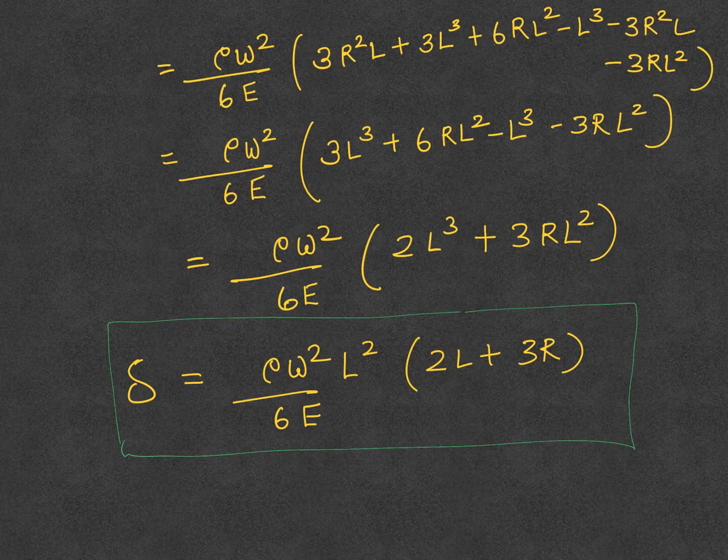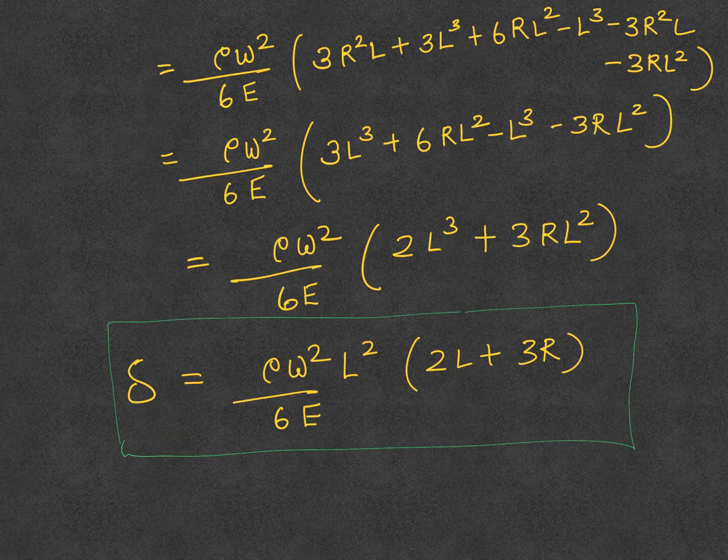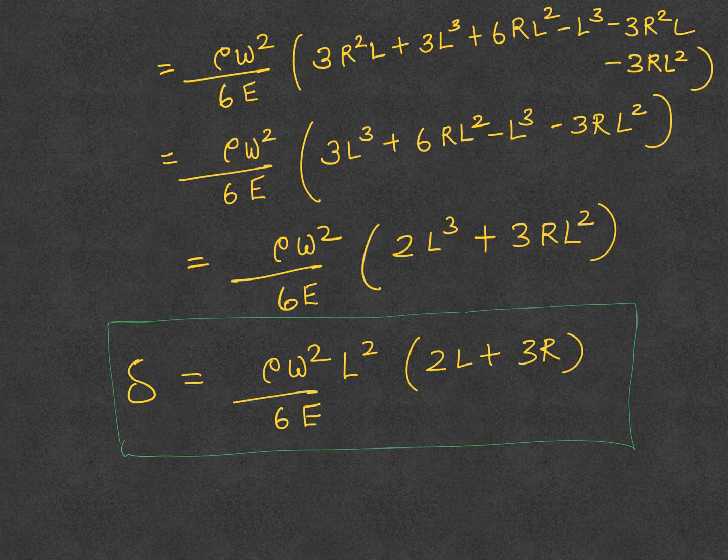It makes sense because the centrifugal force is increasing when you're running the machine at very high RPM. Moreover, the formula tells you when you have a highly stiff material with a high Young's modulus value, the deflections will be lower. That also makes sense because you're making the system more stiff.